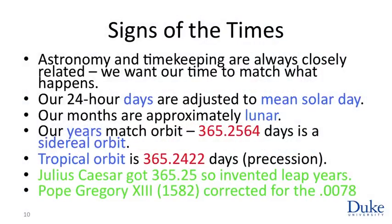We've made some progress in understanding astronomical phenomena and the way they change periodically — the sun and the moon. Let us close this discussion with some interesting relations between astronomy and timekeeping. Units of time kept being defined in terms of the Earth's rotation and its orbit, and this is not a coincidence.